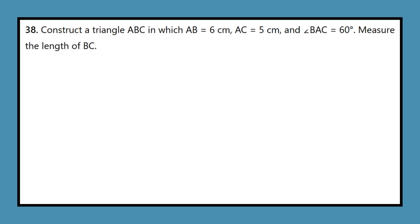Question 38: Construct a triangle ABC in which AB equals 6 cm, AC equals 5 cm, and angle BAC equals 60 degrees. Measure the length of BC.